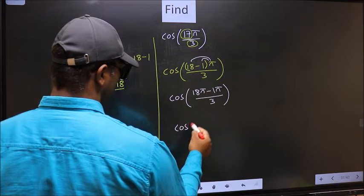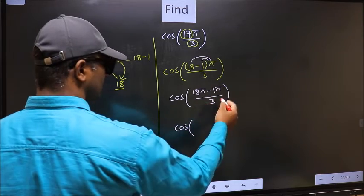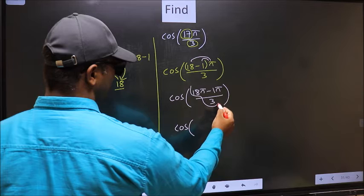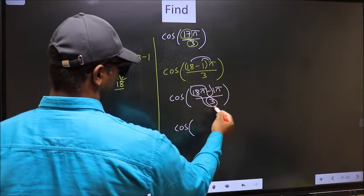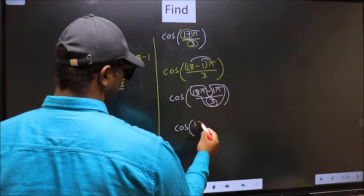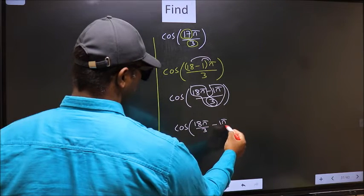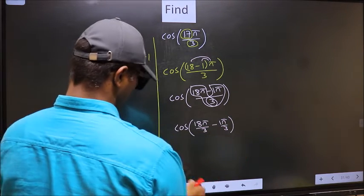Now cos. In this, you should split the denominator in this way: that is 18π by 3 minus 1π by 3. Next.